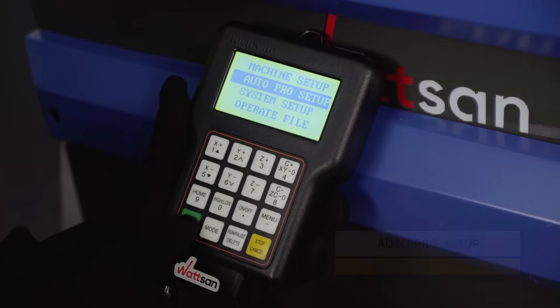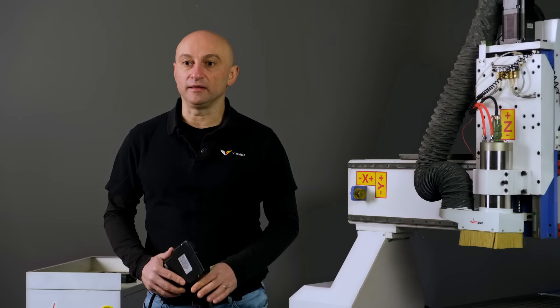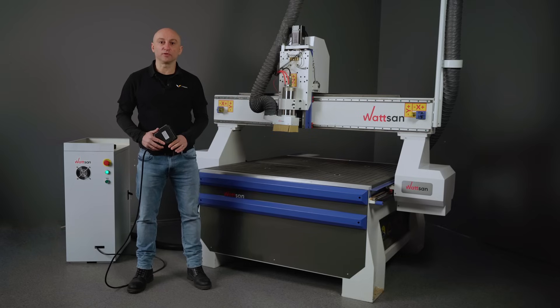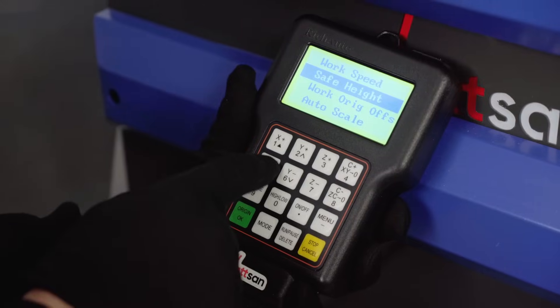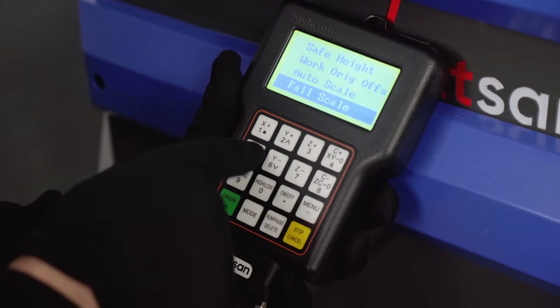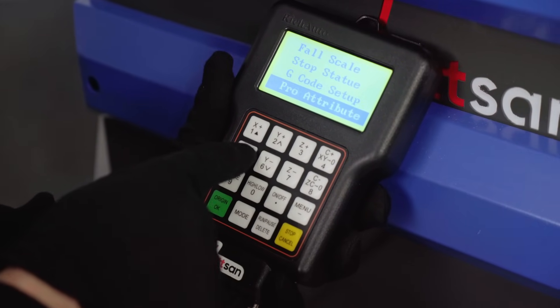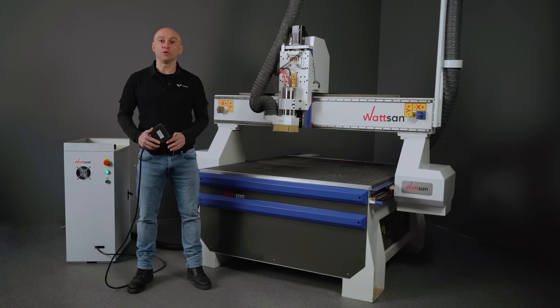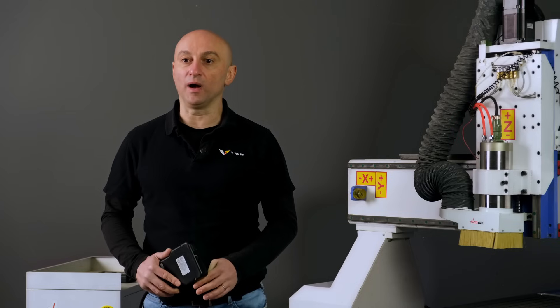Now let's access Auto Pro Setup. In it, there is everything you might need for the milling process itself: working speed, spindle Z axis heights for idle movement, G-code setup, and other setups which you are going to determine while planning a real task.